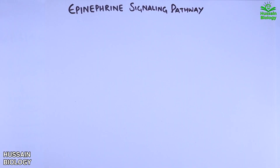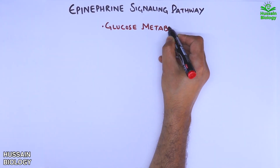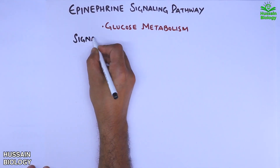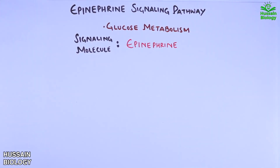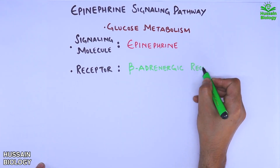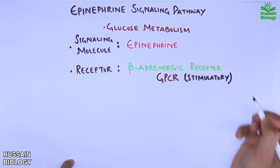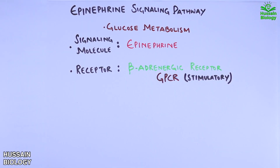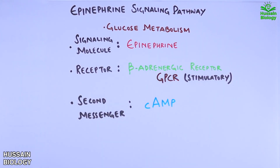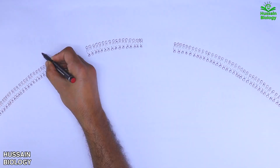In this video we'll be discussing the epinephrine signaling pathway, which regulates glucose metabolism. The signaling molecule in this pathway is the epinephrine hormone, and the receptor for this is the beta adrenergic receptor, which is a type of GPCR protein. This GPCR in turn regulates the stimulatory G protein known as GS, and the second messenger for signal transduction involves cyclic AMP.